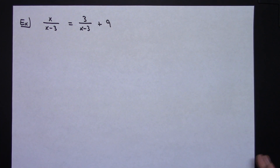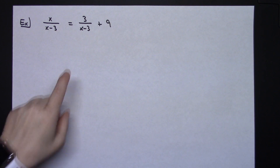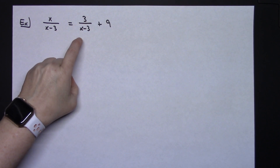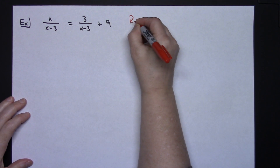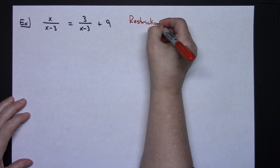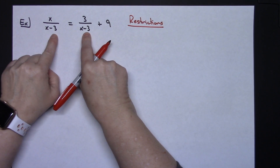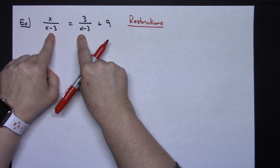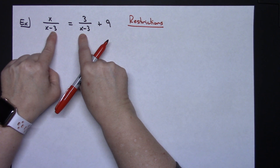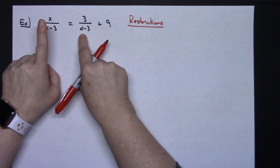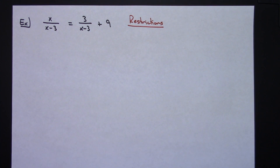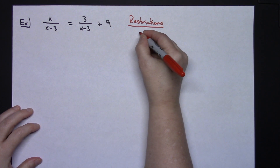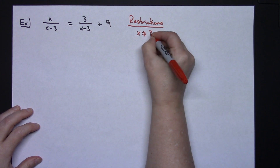On this second example, we have x over x minus 3 equals 3 over x minus 3 plus 9. Again, I'm going to look at my restrictions. Looking at the denominators, I ask what value of x would make the denominator 0. Setting x minus 3 equal to 0 gives x equals 3. If x is 3, then 3 minus 3 is 0 in both denominators. So my restriction is x cannot equal 3.